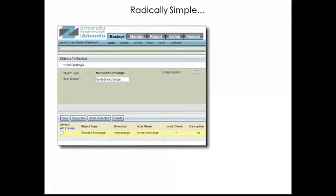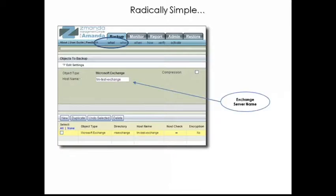As with file system backups, the Zamanda Management Console makes Microsoft Exchange backup as simple as what, where, when, and how. To tell Amanda Enterprise what to backup, we start by creating a backup set. A backup set contains all the details necessary for Amanda Enterprise to know how to backup Microsoft Exchange. To add your Exchange Server to the backup set, all you need to do is specify the client type of Exchange Server and enter the host name of your server.